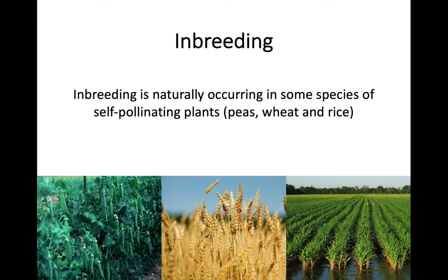Inbreeding can actually naturally occur in some species of self-pollinating plants — if their pollen can pollinate their own flower, they are in fact inbreeding. A lot of very common plant types such as peas, wheat, and rice are all inbred. We'll come back to how this all works later on.